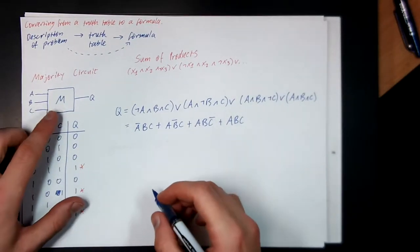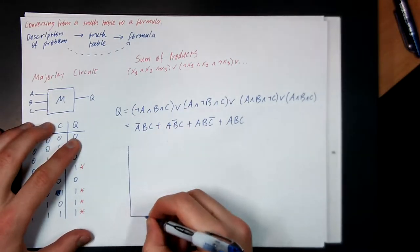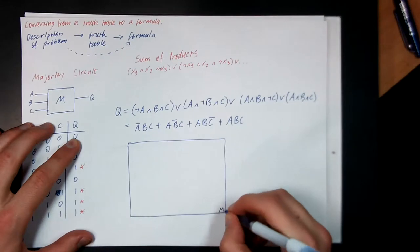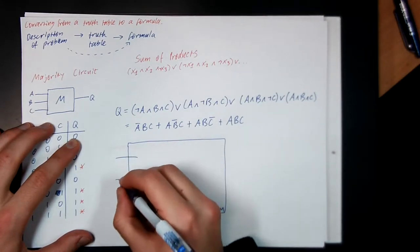So, this box here, M, internally, what does it look like? So I'll draw a big box here to represent the majority circuit M. There are three inputs, A, B and C.